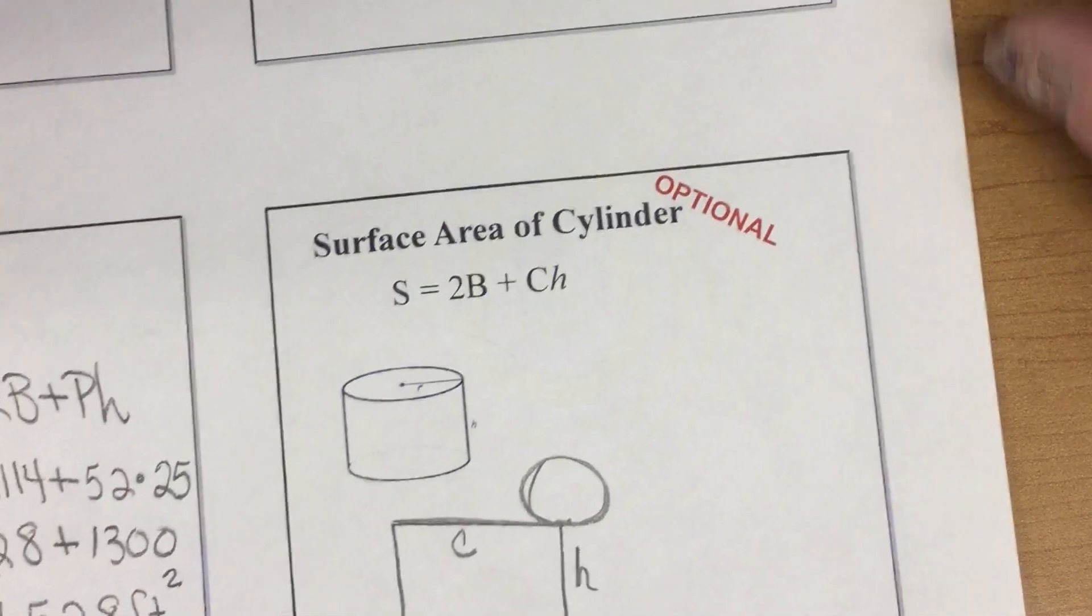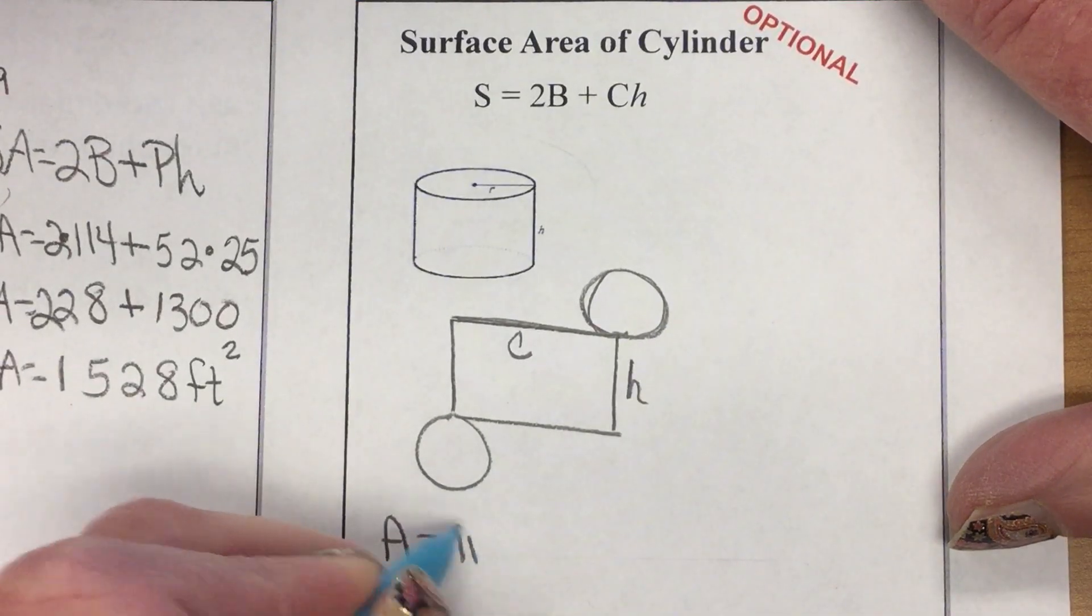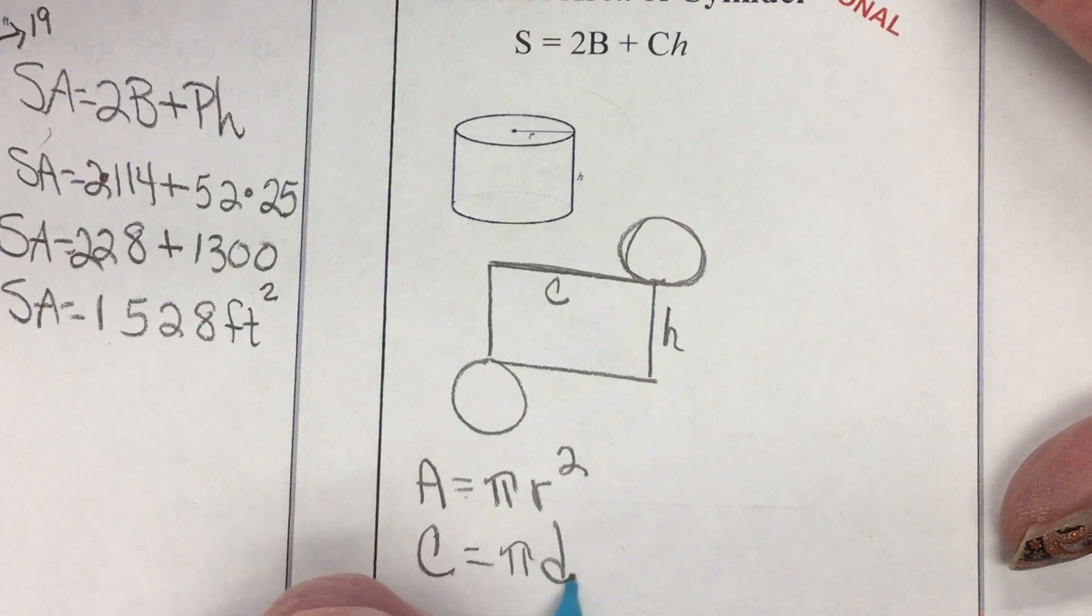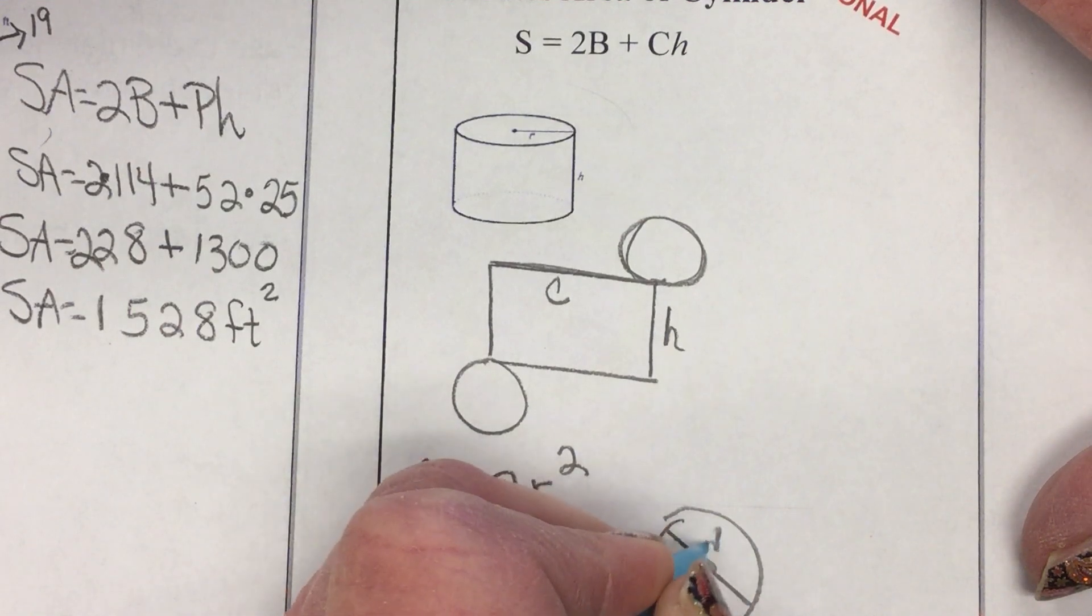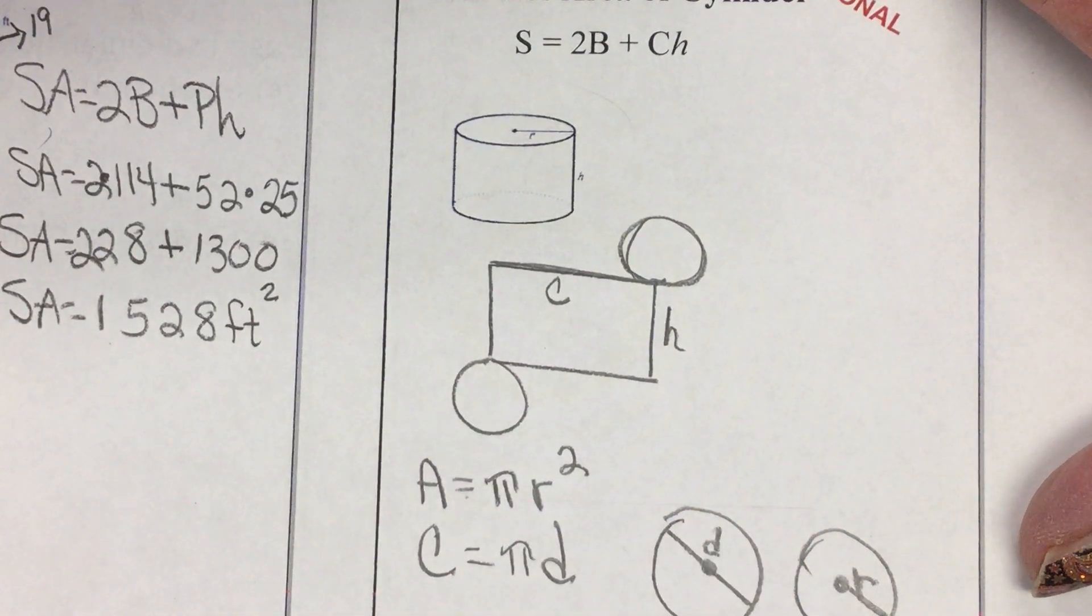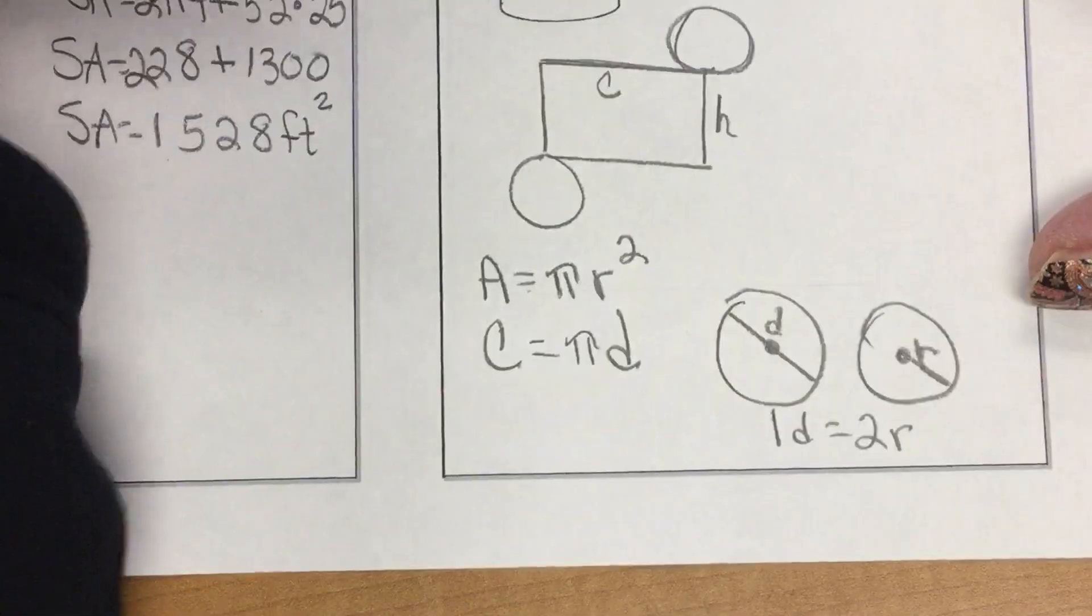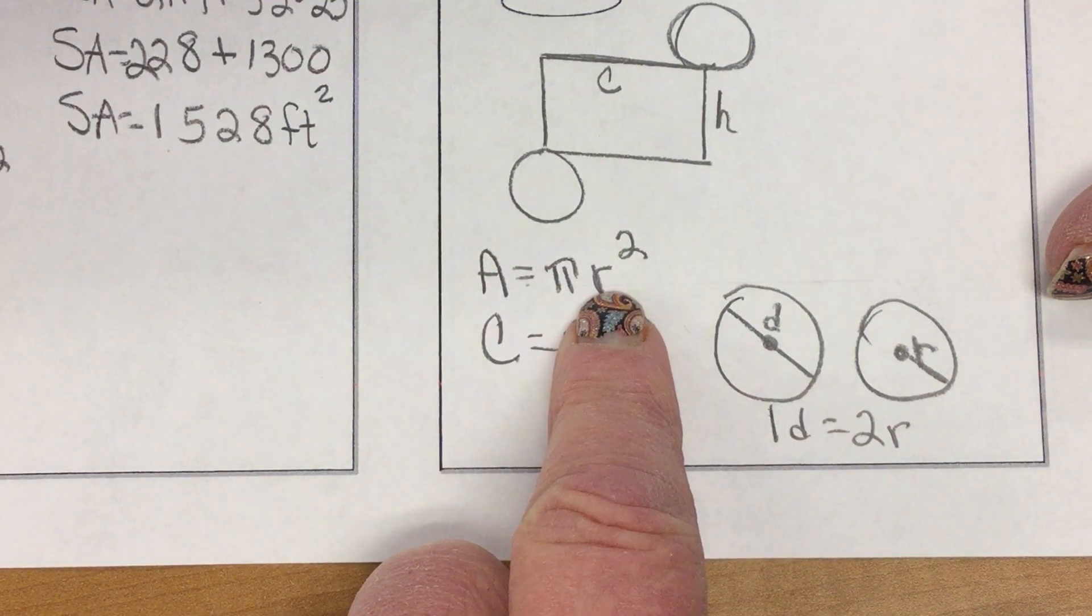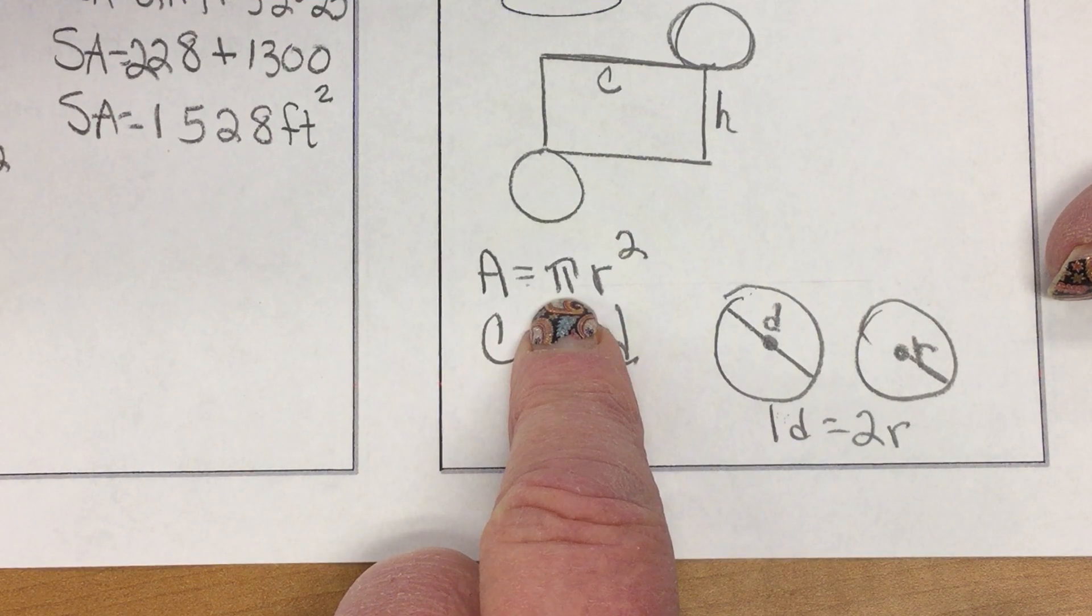Now, here's some things we have to remember about circles. Area of a circle is pi r squared. Circumference of a circle is pi times d, diameter. Now, remember, all the way across is diameter. Halfway across is radius from the center out. And so, one diameter is equal to two radii. One diameter equals two times the radius. R squared is not the same as 2r. It's r times r. Pi, 3.141592653589, etc.